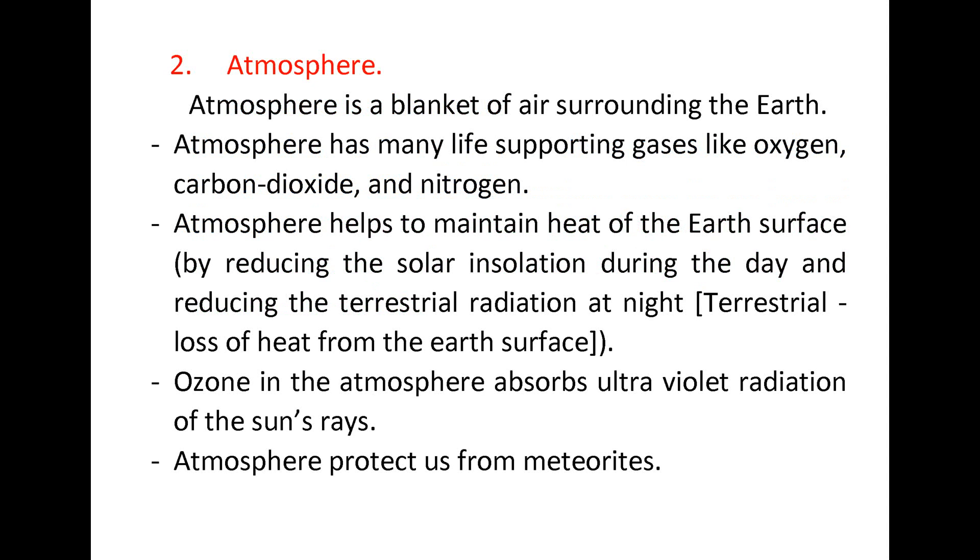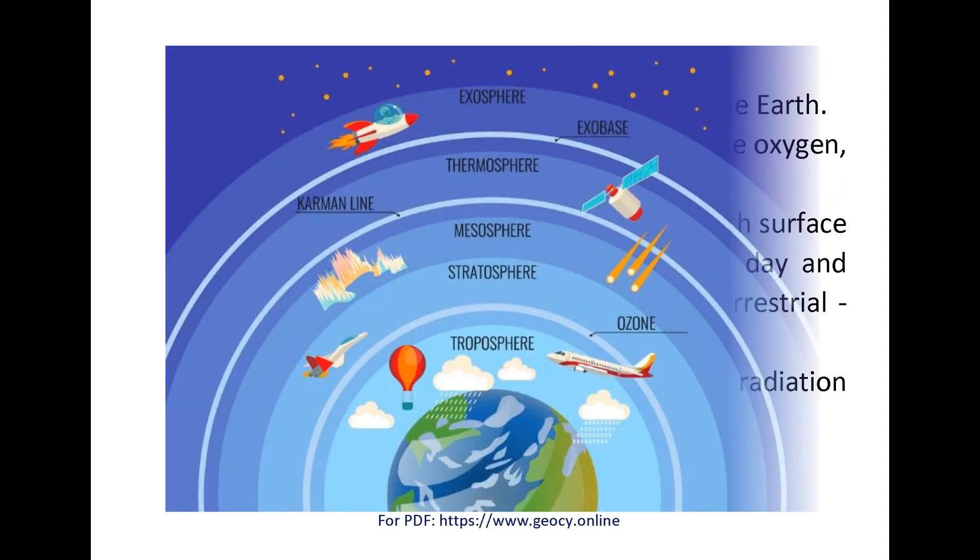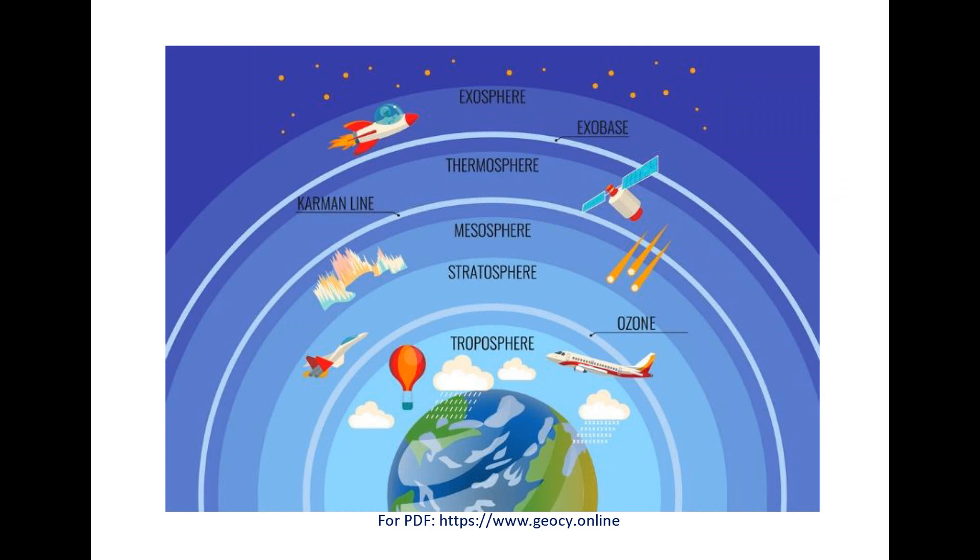Second factor is atmosphere. Atmosphere is a blanket of air surrounding the earth. Atmosphere has many life-supporting gases like oxygen, carbon dioxide, and nitrogen. Atmosphere helps to maintain heat of the earth's surface. Ozone in the atmosphere absorbs ultraviolet radiation of the sun's rays. Atmosphere protects us from meteorites.